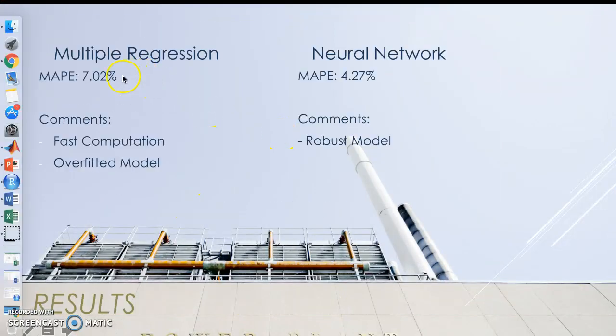This is our multiple regression. It has a mean absolute percent error of 7.02%. It is not robust because it did not use the validation part of the neural network. It just used the training data and tried to have a test set of 30% right after that, which made it overfitted. But it did compensate very fast.